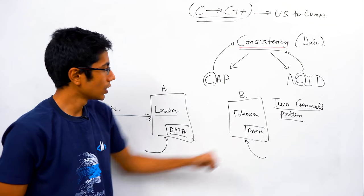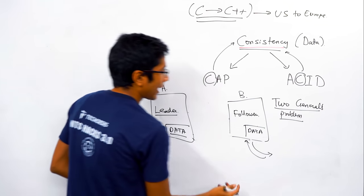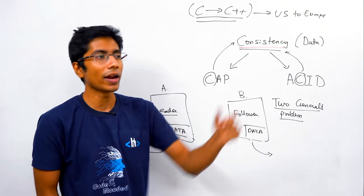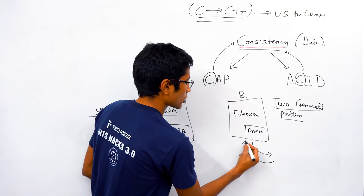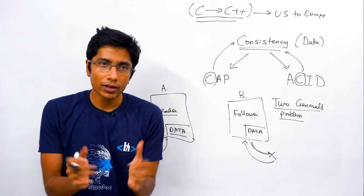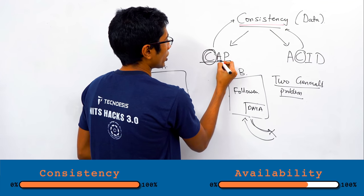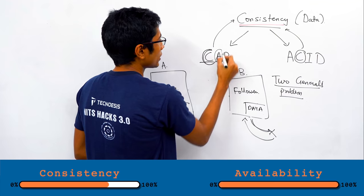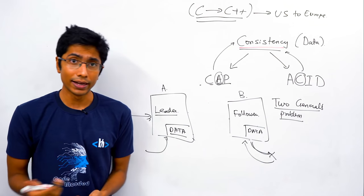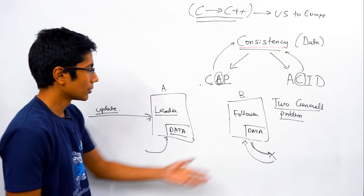But if the data doesn't go through to the follower, you have inconsistency — dirty reads. If you wait for the update to reach the follower before giving a response, the system is not available during that time — it's as good as the system being dead. That's the fundamental tradeoff: if you have pure consistency, your system is not available; and if you have availability, your system will have to suffer inconsistencies. That's why consistency is such a big deal.